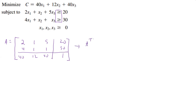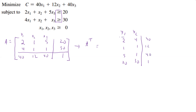Then what we want to do is find A transpose. Our first row becomes our first column, our second row becomes our second column, and our third row becomes our third column. Now we were thinking about this in terms of X1, X2, X3. With our transpose, what's going to happen is we're going to have Y1 and Y2 — we're changing our variable types. So going down: 2, 1, 5, 20; then 4, 1, 1, 30; and then 40, 12, 40, 1. That is our A transpose. We start with X's, and when we do the A transpose, we convert those to Y's.